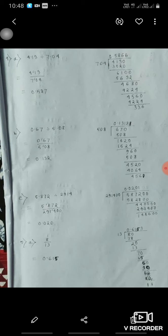B part, 0.67 divided by 5.08, it will be 0.132. C part, 5.872 divided by 291.4 means it will be equal to 0.020.